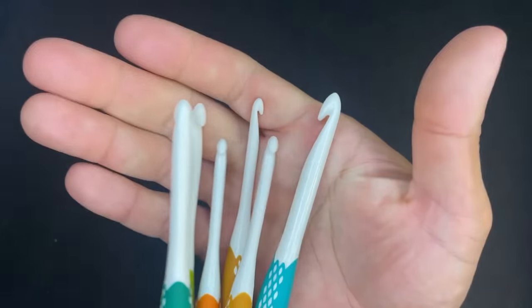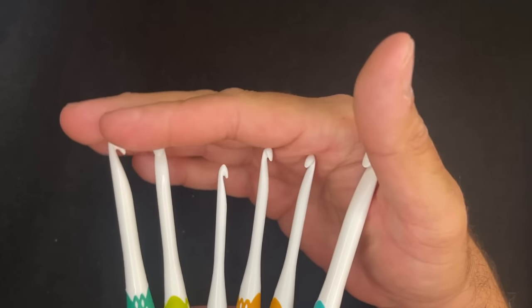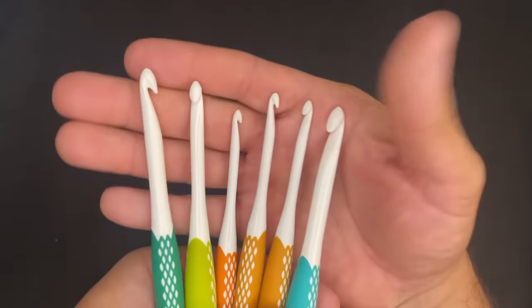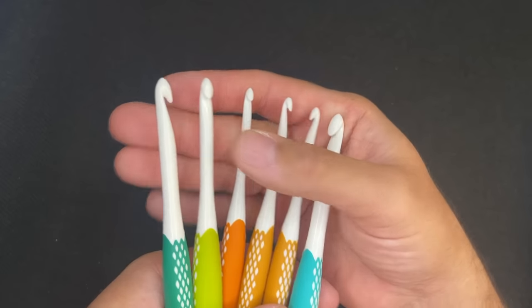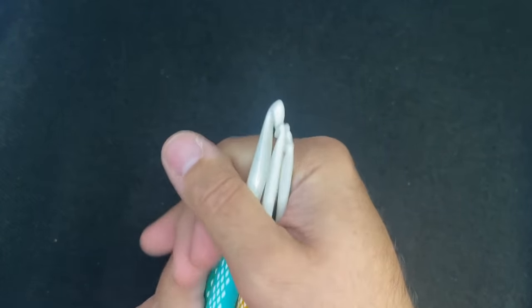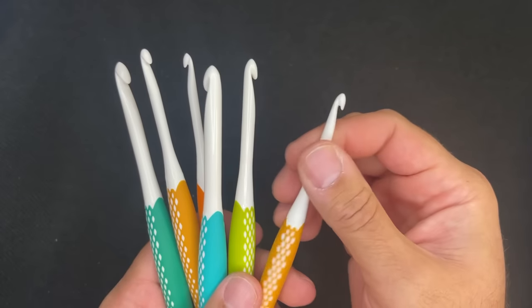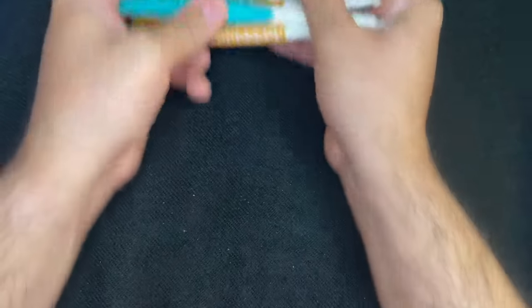You can catch these at Michaels. Use a 40% off coupon when they were 40% off sale. You can get these for five to six dollars each if you catch a sale. If not, they go to upwards of $10 a hook. But the smaller ones are cheaper. You can find the smaller ones for like $6.